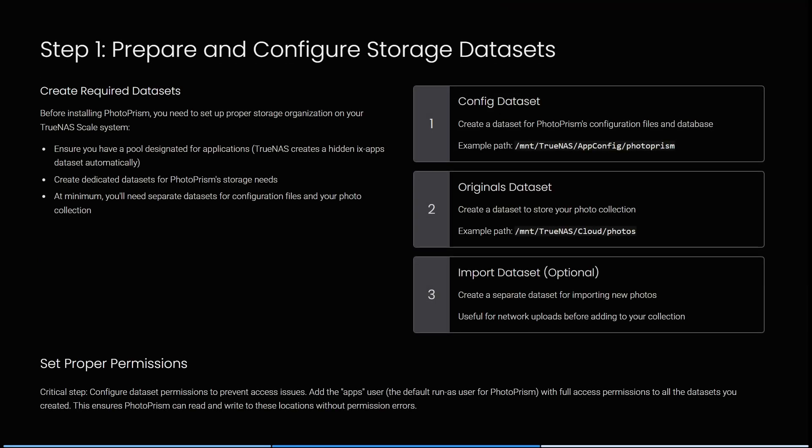The first thing is you need to prepare and configure storage datasets. You need to create the required datasets. Before installing PhotoPRISM, you need to set a proper storage organization on your TrueNAS Scale system. This entails ensuring that you have a pool designated for applications, and then you can create dedicated datasets for PhotoPRISM's storage needs. At minimum, you will need separate datasets for configuration files and your photo collections.